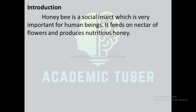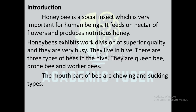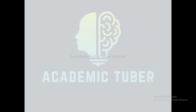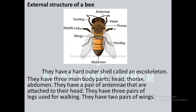Honey bee is a social insect which is very important for human beings. It feeds on nectar of flowers and produces nutritious honey. Honey bee exhibits work division of superior quality and they are very busy. They live in a hive. There are three types of bee in the hive: queen bee, drone bee, and worker bee. The mouth parts of bees are chewing and sucking type.